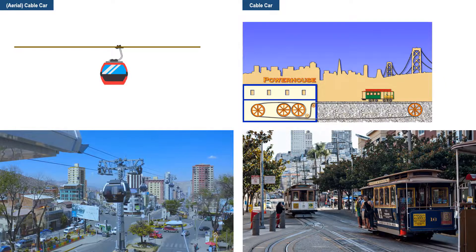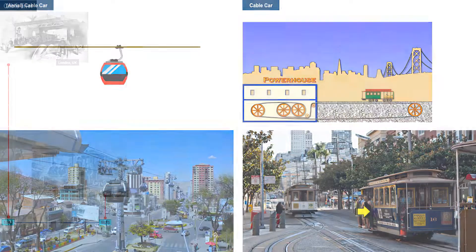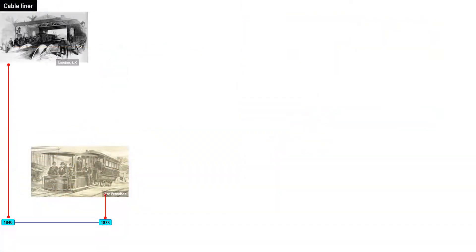At this point, we now have two CPT systems in the world called cable cars — one is in the air and one is on the ground. Most people will call aerial cable cars by its abbreviated name, cable car. The cable car in San Francisco is the only one of its kind in the world, so the confusion will only be to a very few.